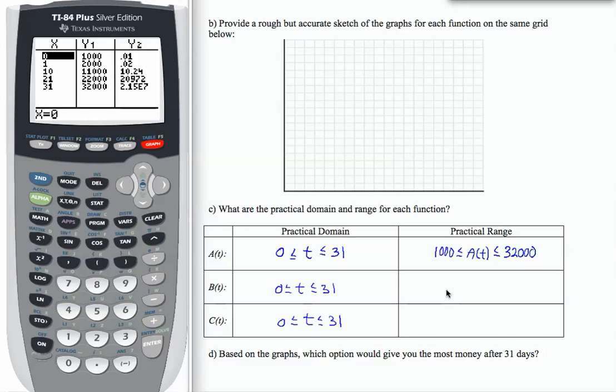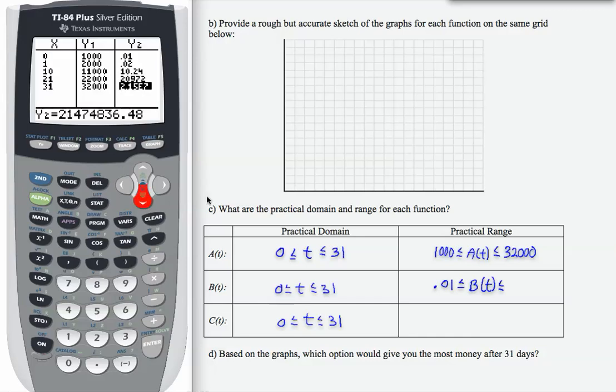If I look at function B, those values were here in Y2. When my input is zero, my output is 0.01. So that is the starting place for my outputs for function B. And my ending value is the very large number that is my output when my input is 31 in function B.